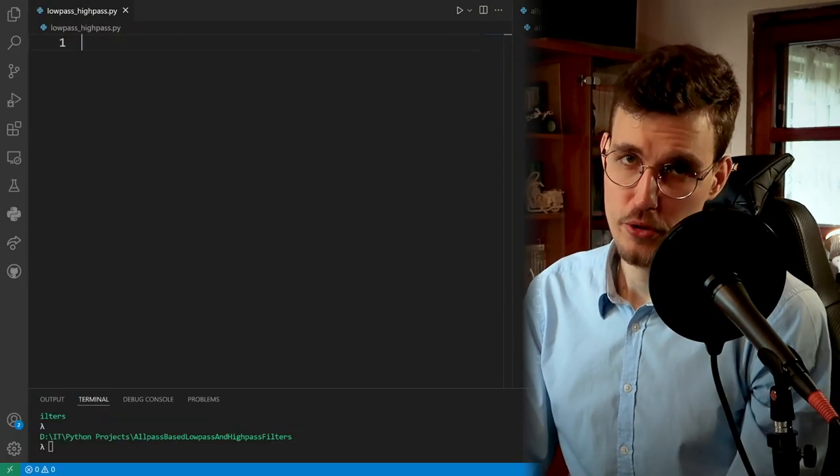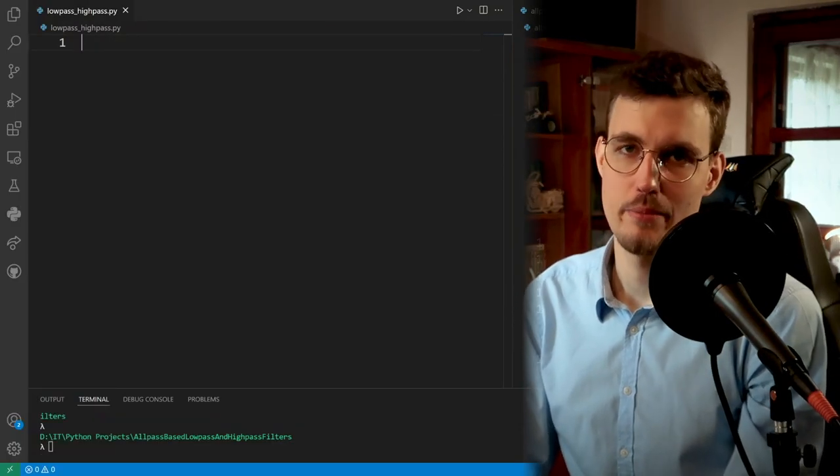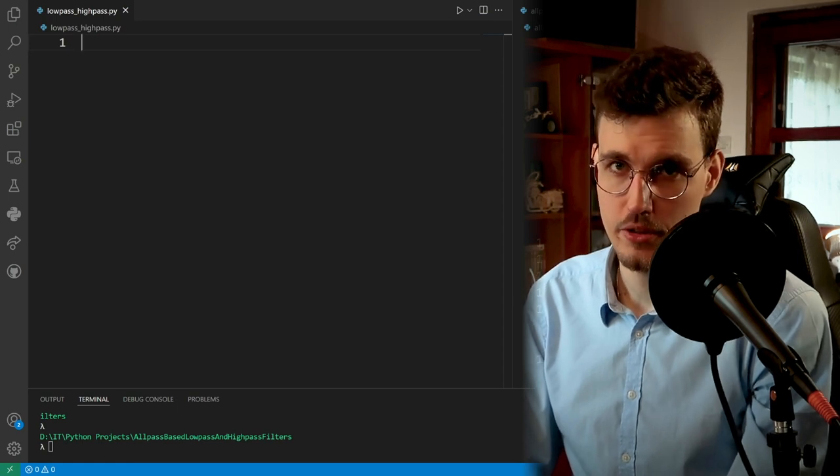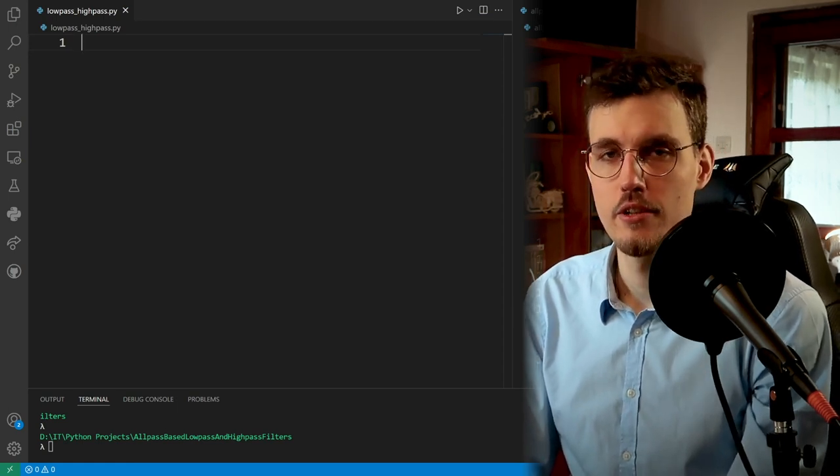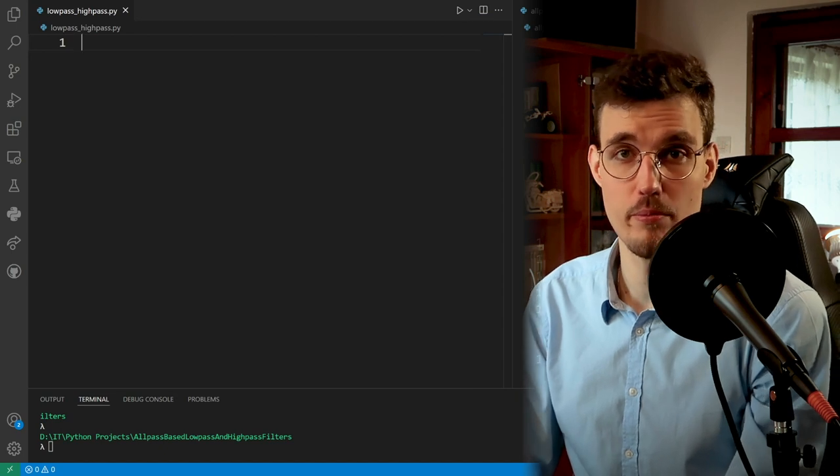I will now show you a sample implementation of the all-pass-based low-pass and high-pass filters in Python. First, let's start with the Shebang and some useful imports.